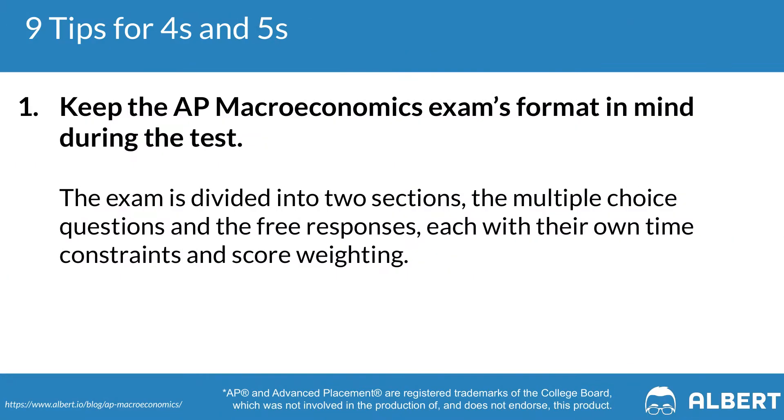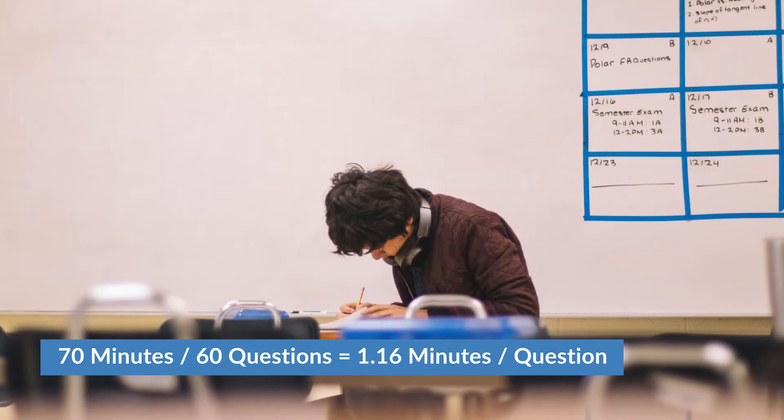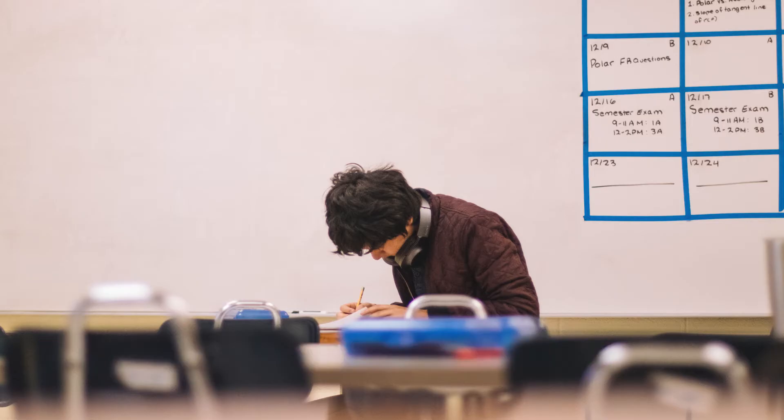The first tip for tackling AP macroeconomics is to keep the exam format in mind. The multiple choice section makes up 67% of your exam score, whereas the free response section only makes up 33%. You have 60 questions to answer in 70 minutes — a little more than one minute per question. The free response section gives you an hour for three questions, including one longer-form FRQ and two shorter ones.